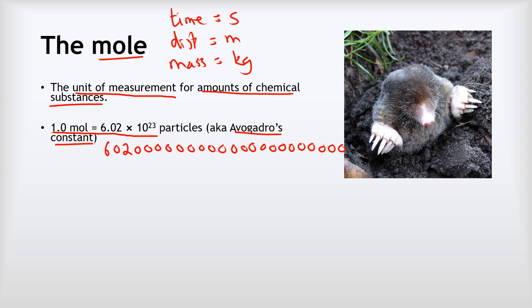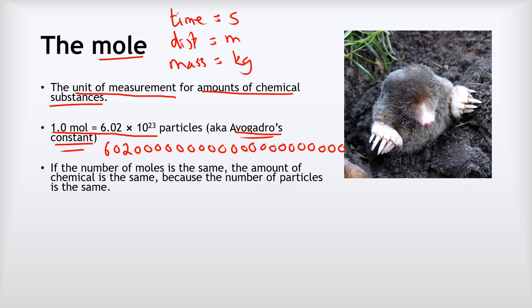It's that huge big number there. We call it Avogadro's constant, or just the mole, because it's a lot easier to work with than that huge number. Importantly, if the number of moles of two substances is the same, it means that the amount of the chemical is the same because the number of particles is the same.